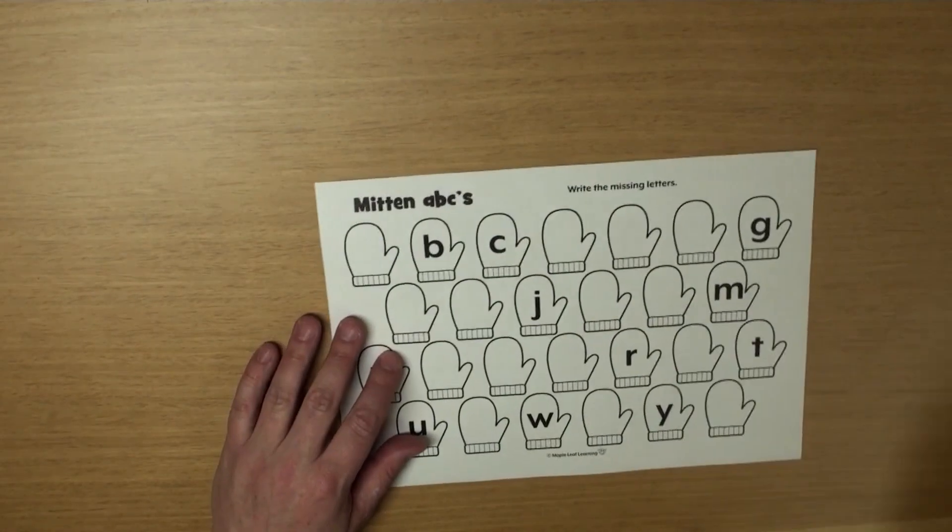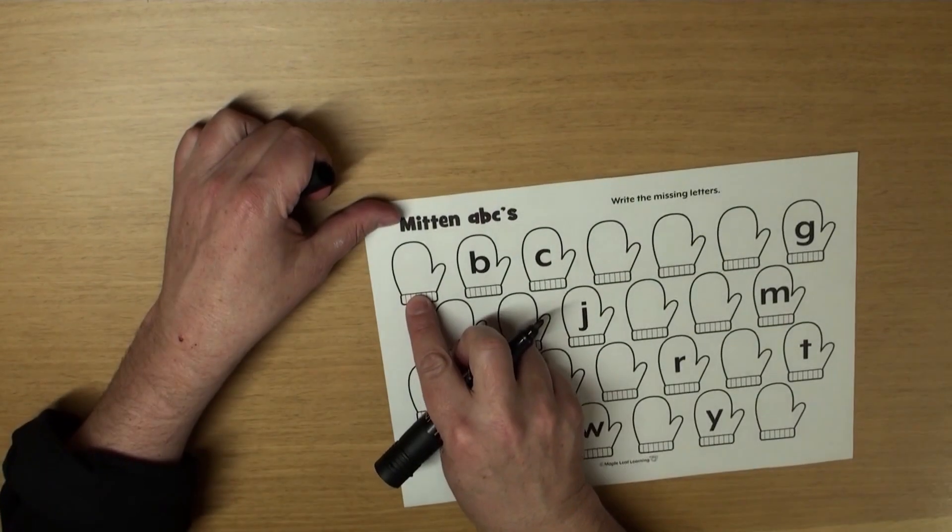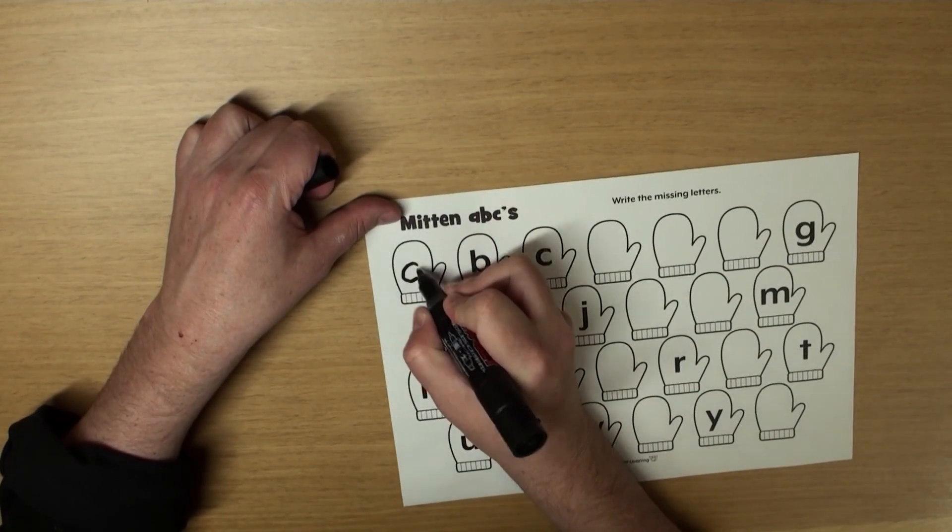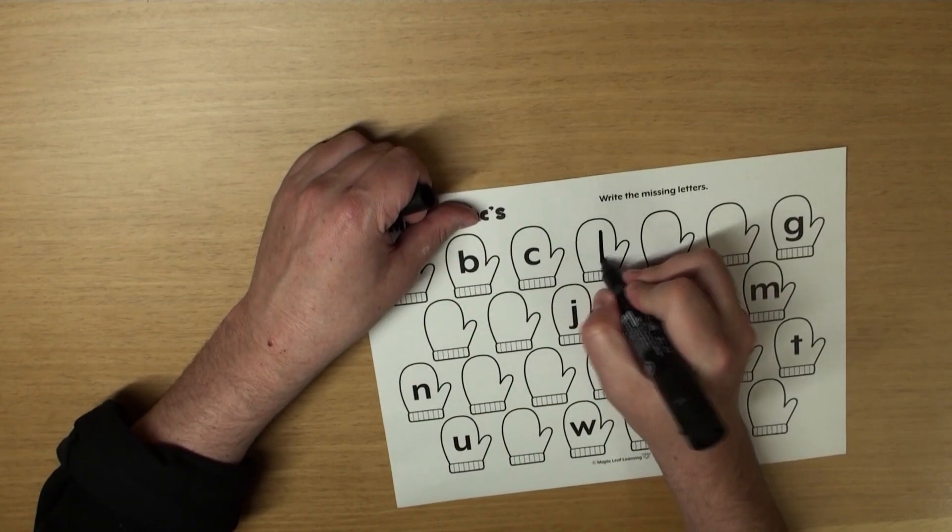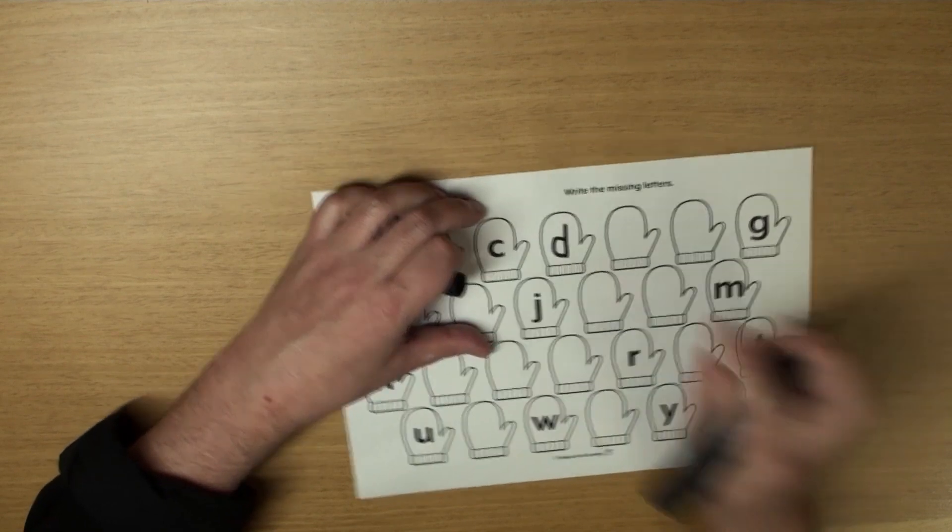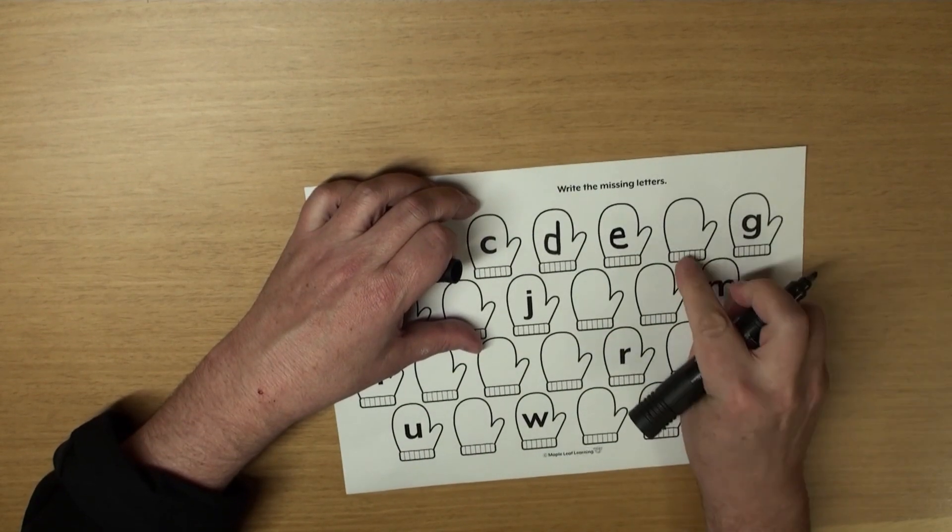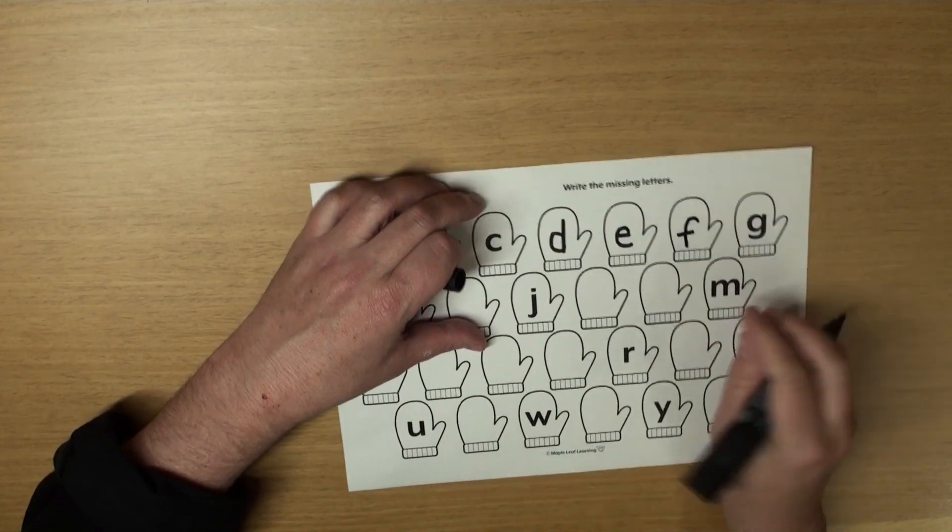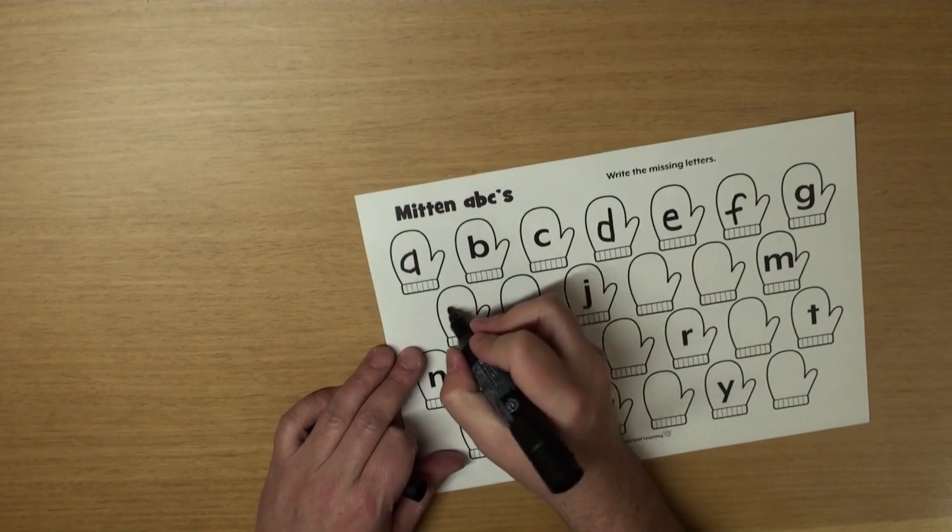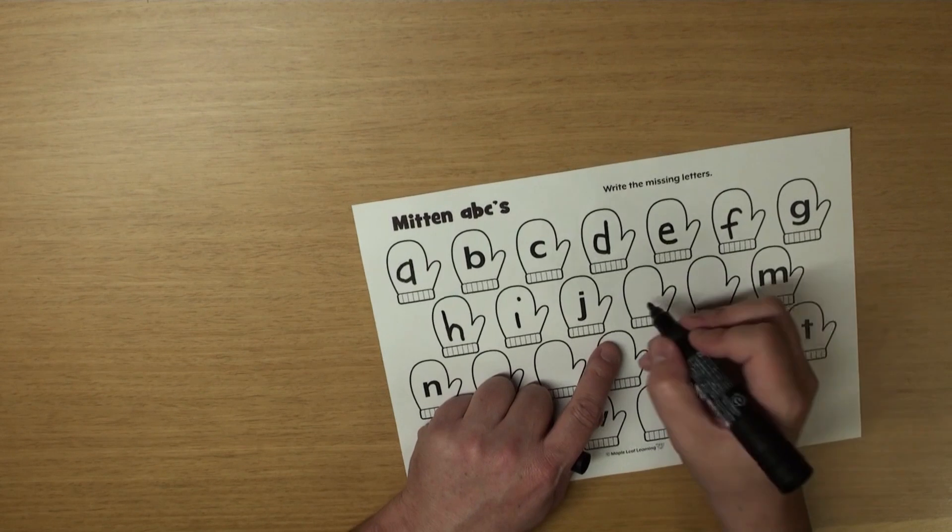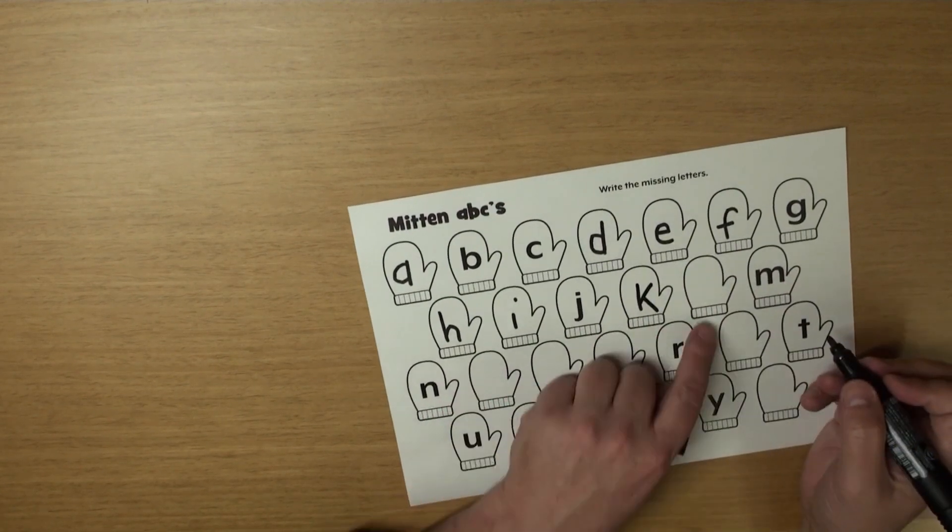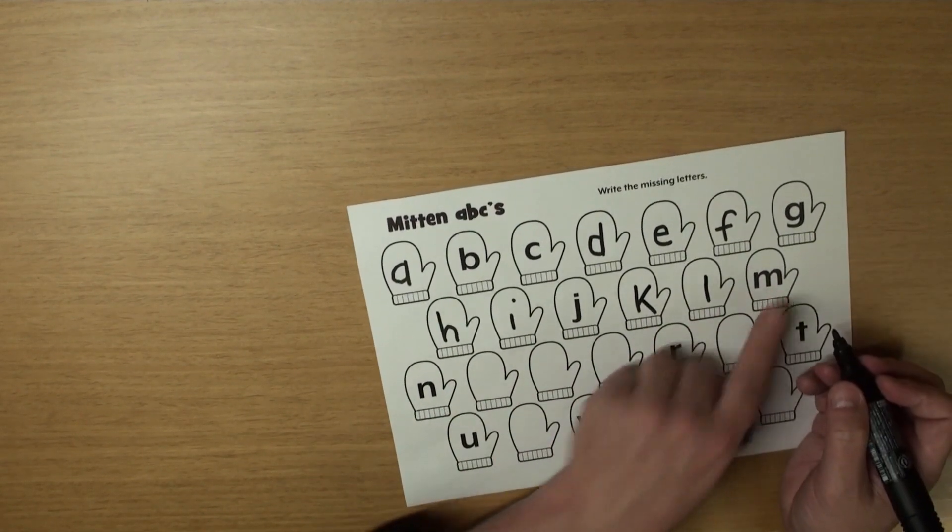Let's do the lowercase. A, B, C, D, E, F, G, H, I, J, K, L, M.